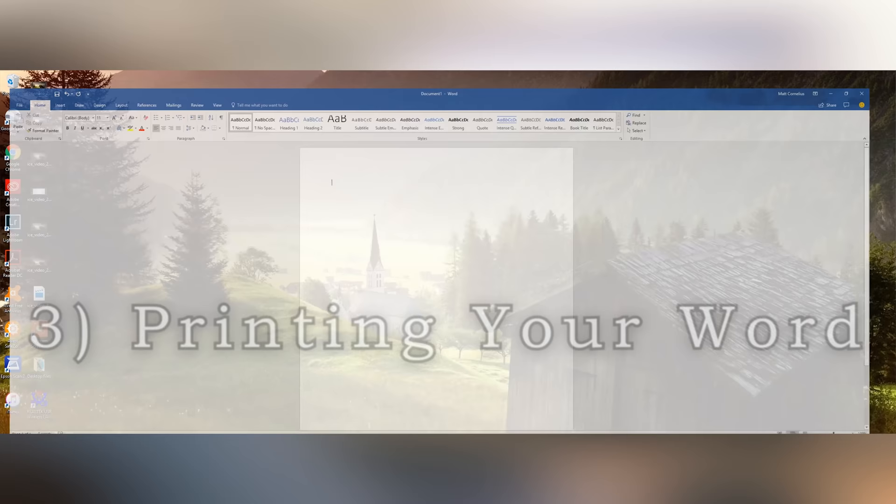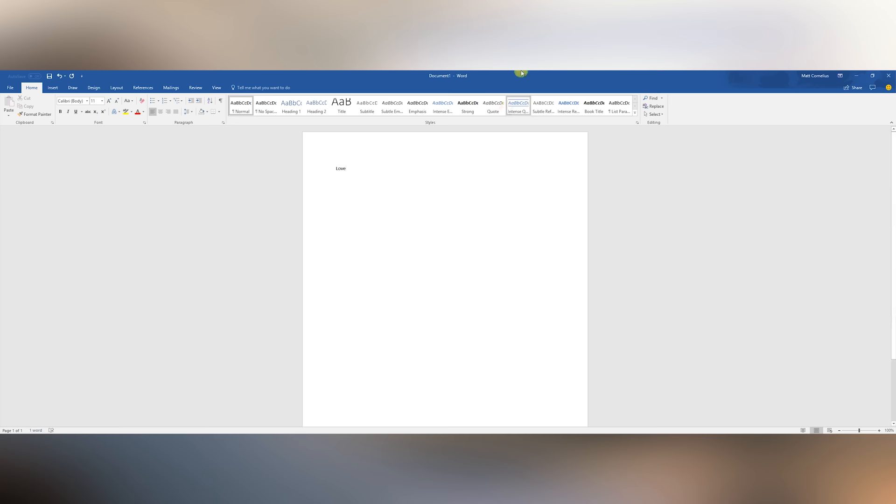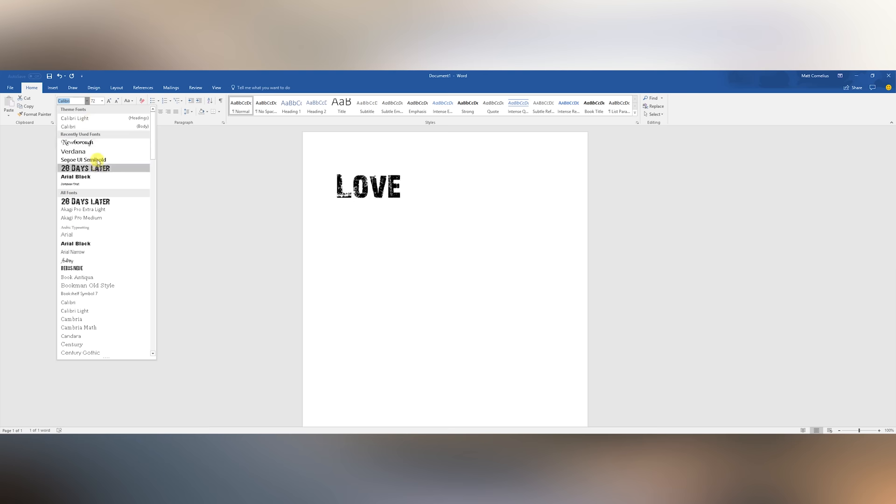I'm going to open up Microsoft Word here. And the word I think I'm going to use is the word love. Now this is really small. Let's increase this to size 72. But that's a basic font right here. So I want to go over here to where my fonts are at. Now I downloaded this font right here from 1000freefonts.com called Nubora. I'm really liking it. Love the way it looks. And there we go.